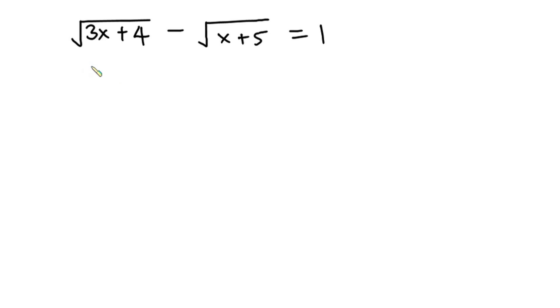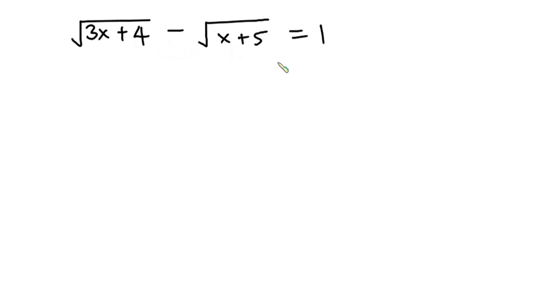Hello everyone. In this video, we'll be solving for the value of x in this radical equation: the square root of 3x plus 4 minus the square root of x plus 5 is equal to 1.